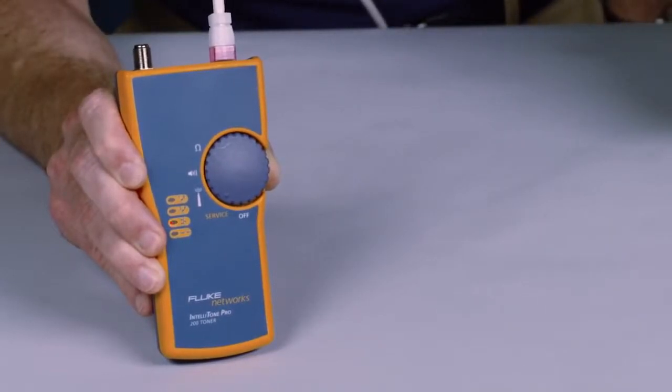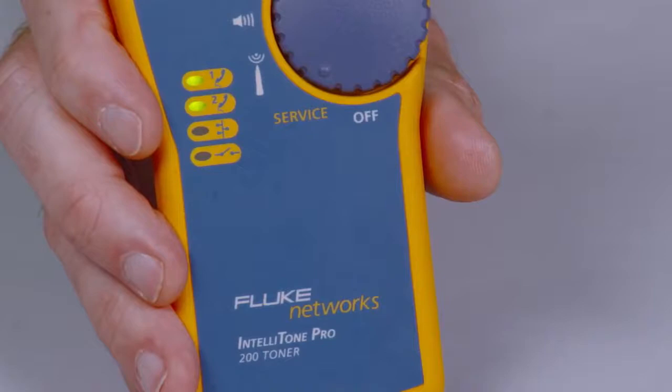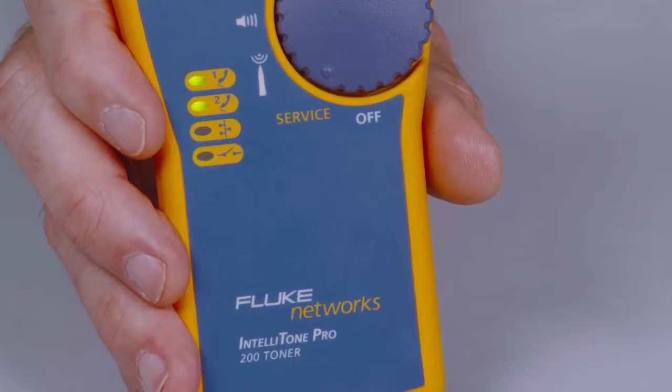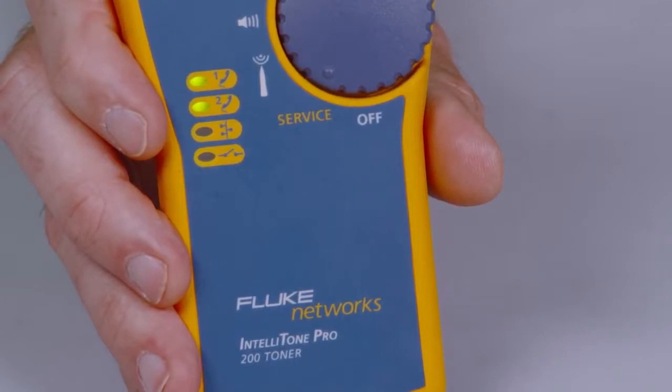Use the 100 to detect line one voltage, polarity, and ring. The IntelliTone Pro 200 adds line two troubleshooting. Confirm telecom circuits with the built-in talk battery capability and validate telephone service and polarity.